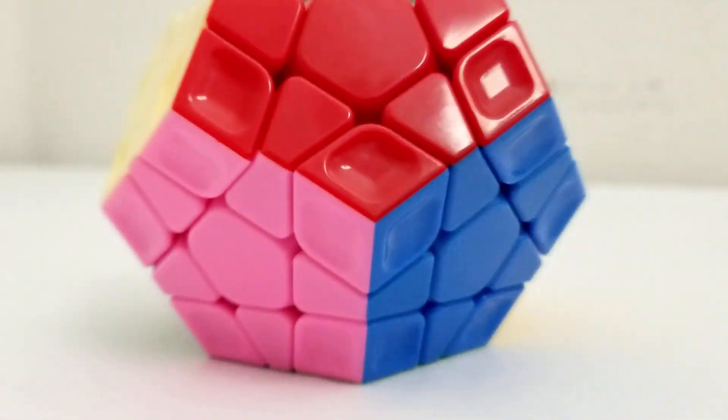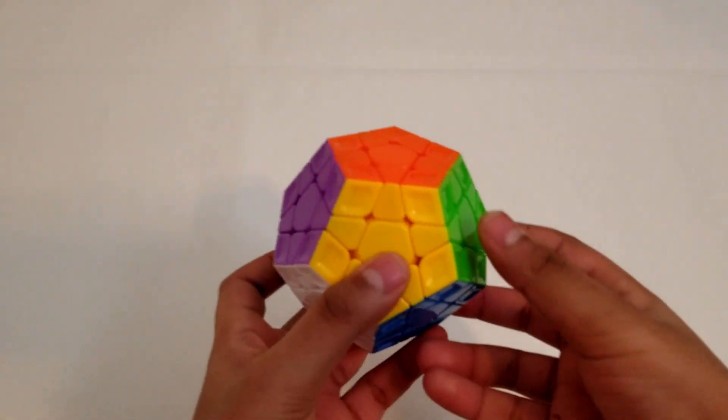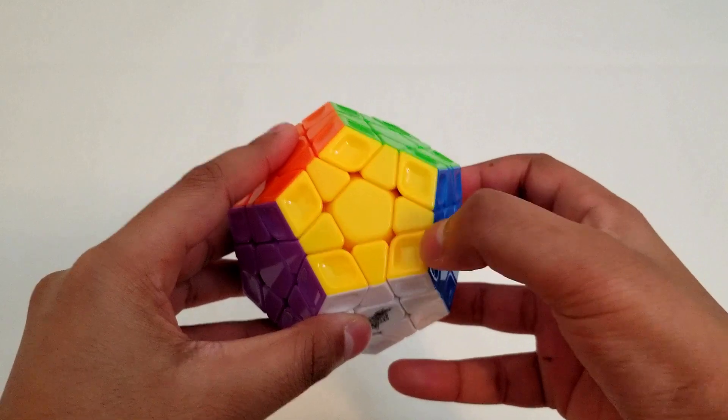Without further ado, let's get started. First, let's start by talking about the structure of the Megaminx. The Megaminx has 12 sides and on each side it has 11 pieces.